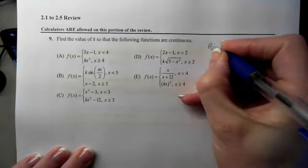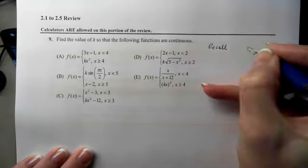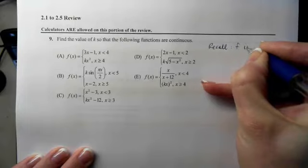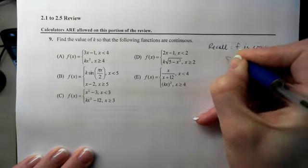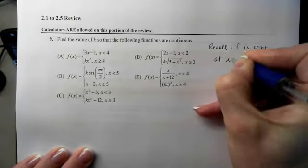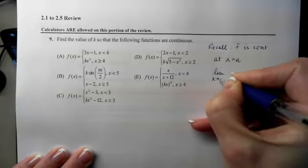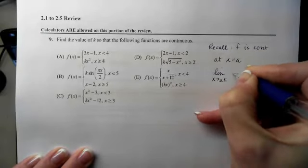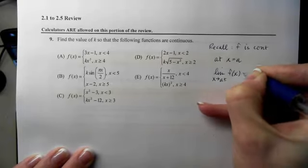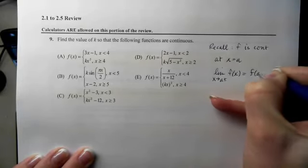So let's recall that in order to be continuous at a value a, not only does the limit as we're approaching a from both sides have to exist, but it has to equal the output of the function at a.